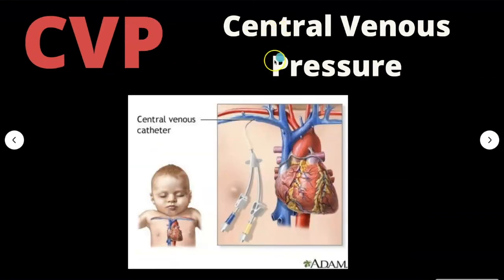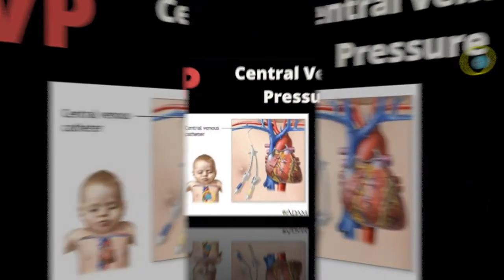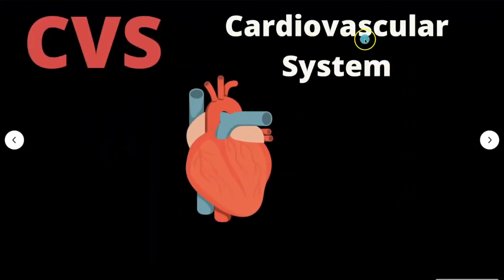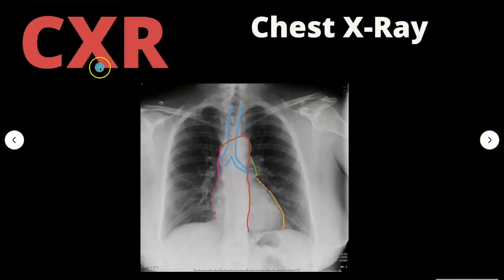CVP is central venous pressure, which is a direct measurement of blood pressure in the right atrium and vena cava — a line loops in and goes into the right atrium. CVS is cardiovascular system. CXR is chest x-ray.